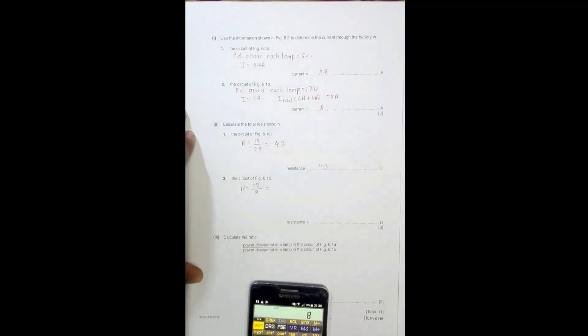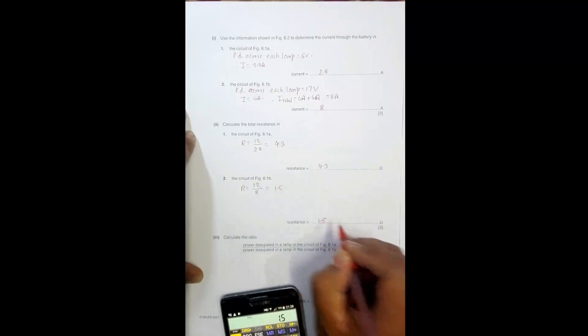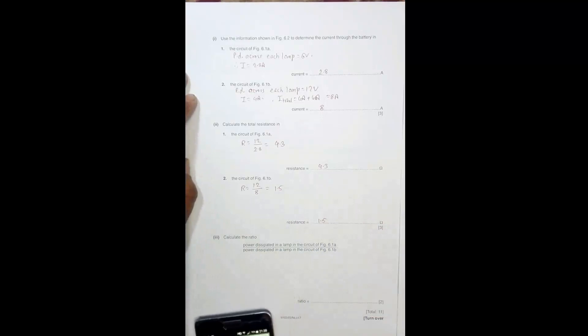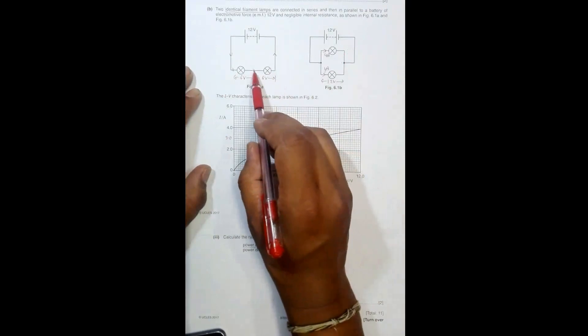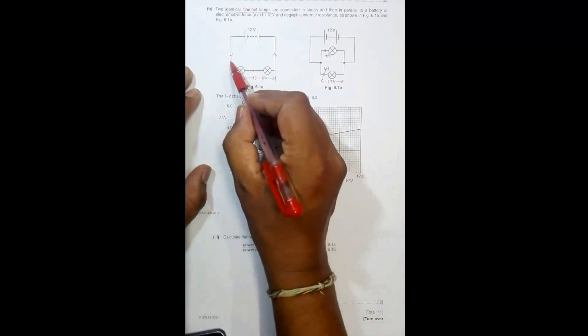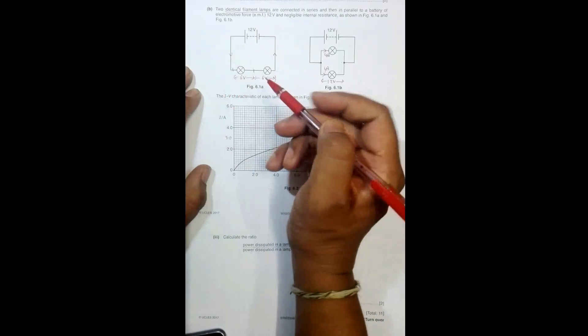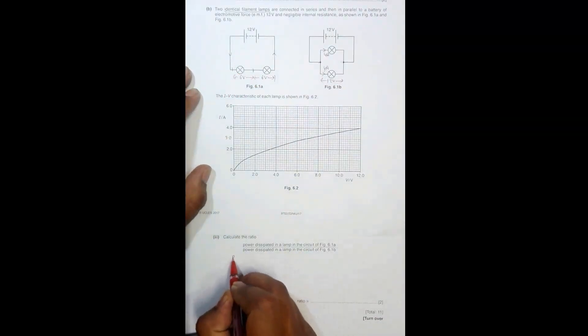Now the last question: power dissipated in a lamp in the circuit. In this case, the current is 2.8 and PD is 6. So power in the first one, power in 6.1A equals current 2.8 into PD 6.0.